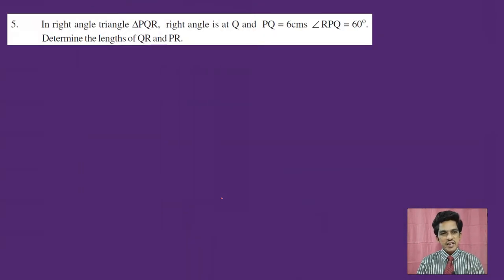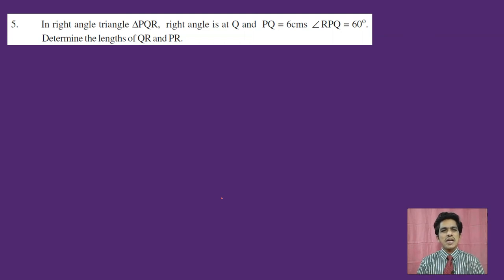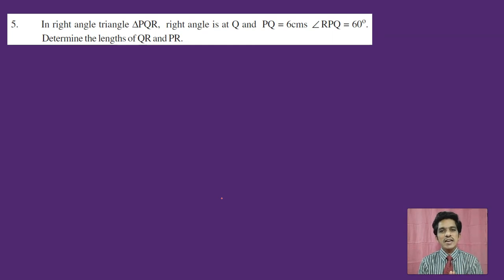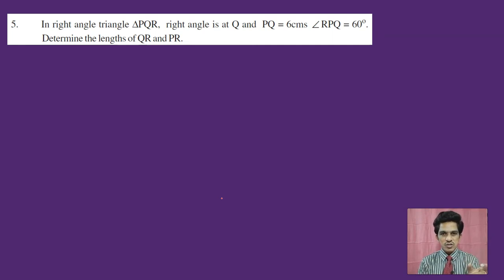Let us move to question number 5. In a right triangle PQR, right angle is at Q. We are given PQ equals 6 centimetres and angle P equals 60 degrees. We have to determine the values of QR and PR.